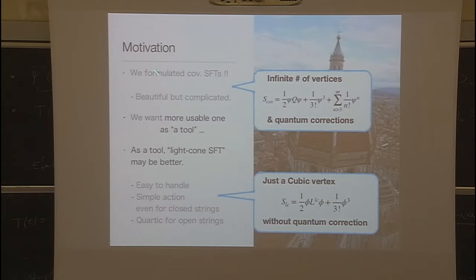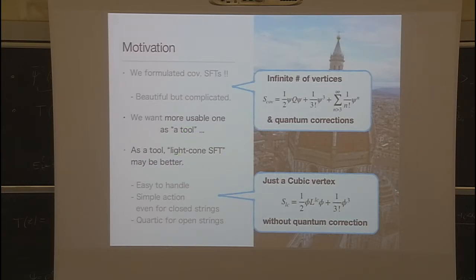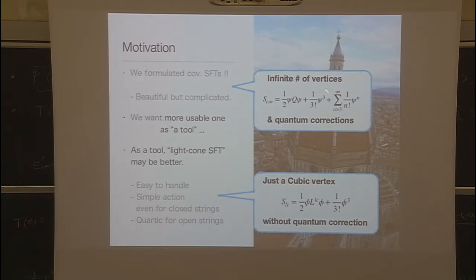We have formulated covariant superstring field theory. It looks very beautiful, but also complicated. If possible, we want a more usable theory as a tool. Kaku-Kikawa's light cone string field theory looks nicer and better, because it has a very simple action and is easy to handle — even for closed strings. If we can understand some relation between these more explicitly or more directly, our covariant string field theory becomes better, as well as the light cone theory. This is my motivation.